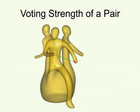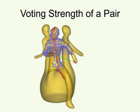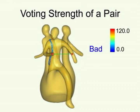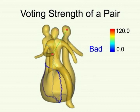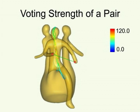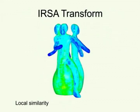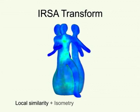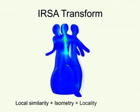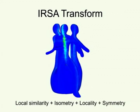To compute IRSA transform, the voting strength of a point pair is determined by the extent of intrinsic reflectional symmetry they represent. Each pair is subjected to a series of filters. Each filtering step leads to a cleaner IRSA field. More technical details can be found in the paper.